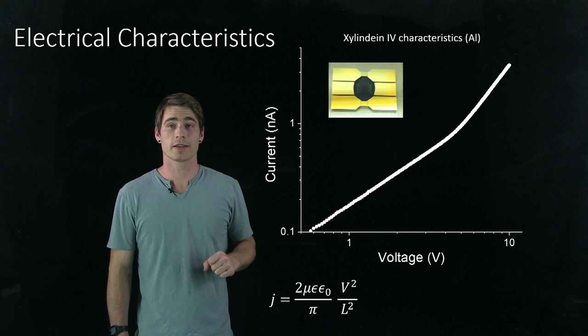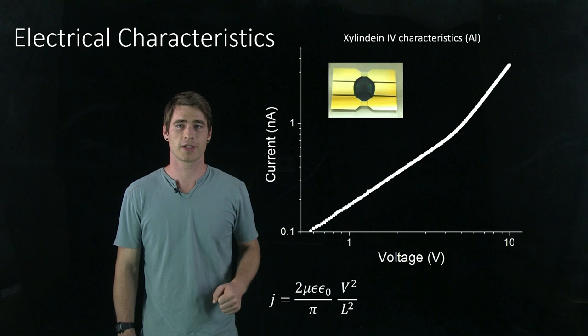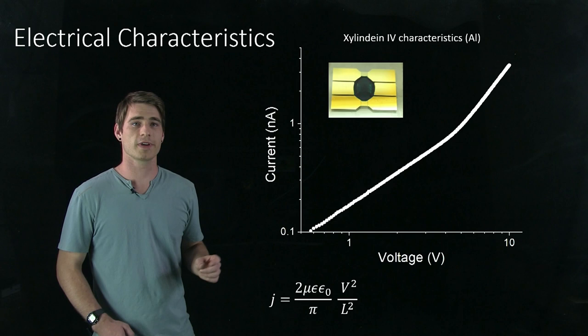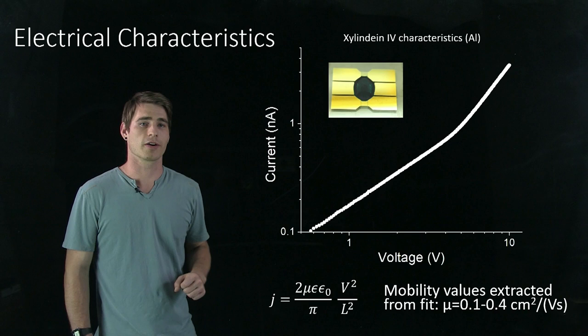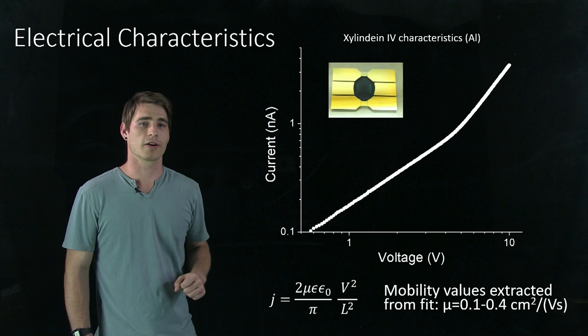Now this value, μ, is the effective mobility. This is a measure of how fast an electron can move in a given electric field. This is a key parameter for organic semiconductors. And when we fit this equation to this measurement here, we find mobility values that are in the range of 0.1 to 0.4 centimeters squared per volt second, which is fairly decent for this material.